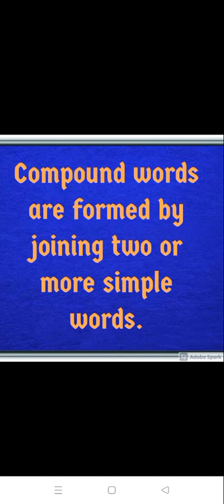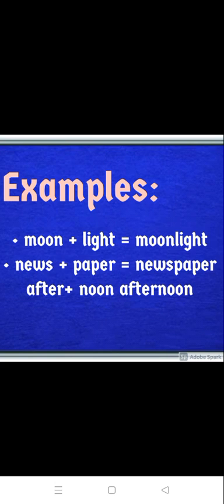COMPOUND WORDS are formed by joining two or more simple words. For example, when we add MOON with LIGHT, it becomes MOONLIGHT. When we add NEWS to PAPER, it becomes NEWSPAPER. When we add AFTER to NOON, it becomes AFTERNOON.